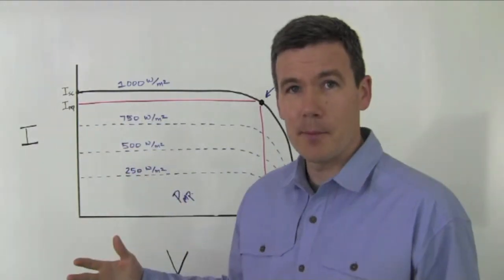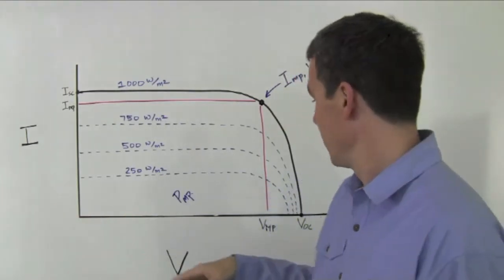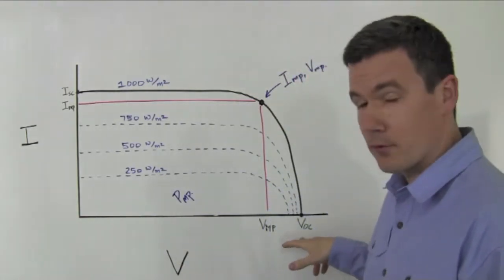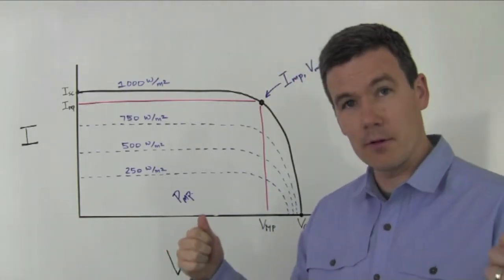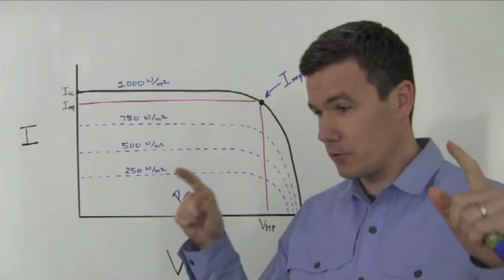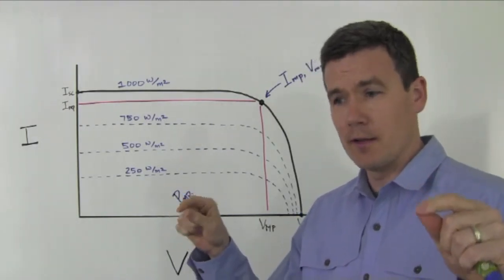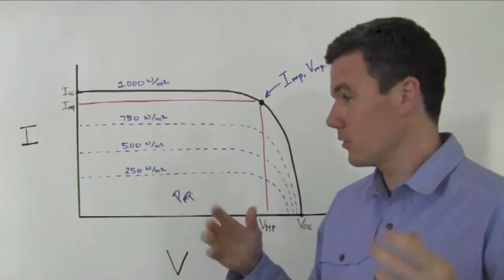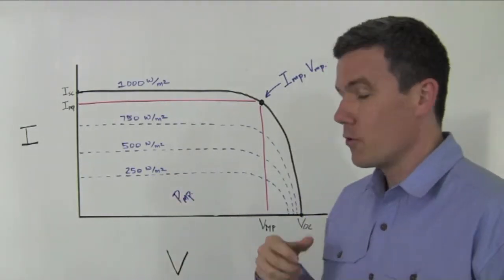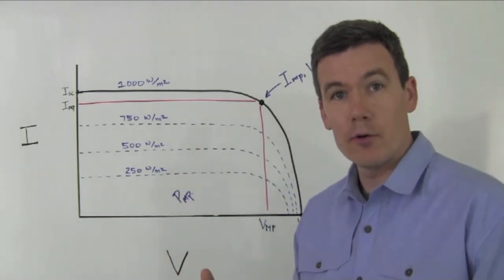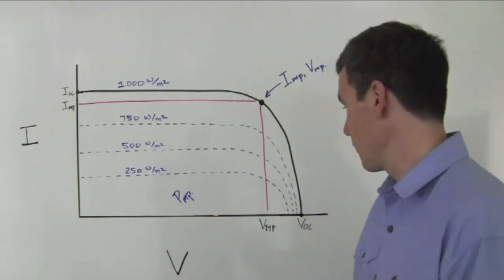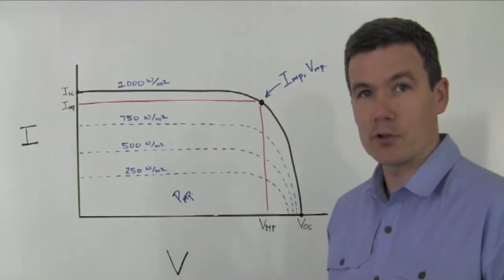IMP is the maximum current at maximum power. VOC is open circuit voltage. If you open circuit the ends of the lead of the solar module and place a meter there and measure the open circuit voltage, that's the open circuit voltage. That's the voltage that you measure at open circuit with no load pulling down the voltage on that solar module. And VMP is the voltage at maximum power.